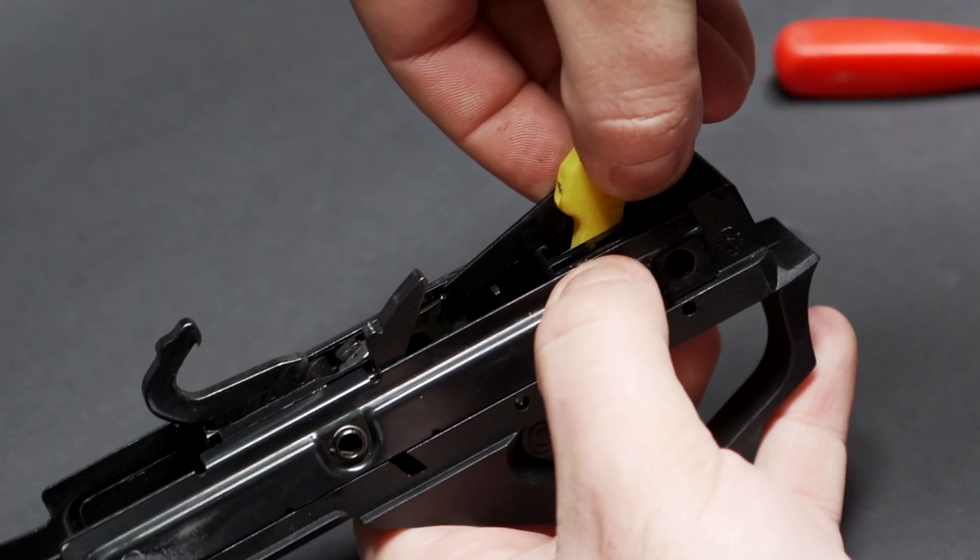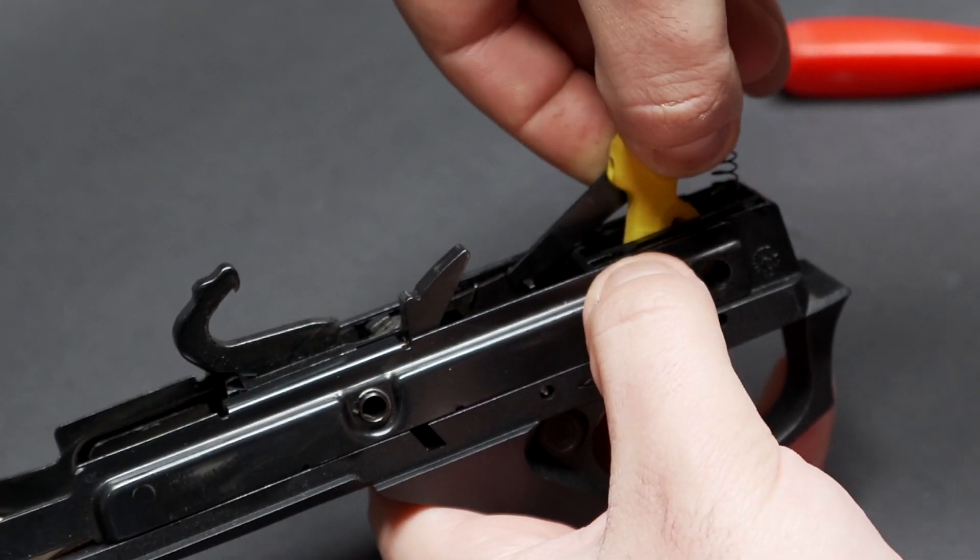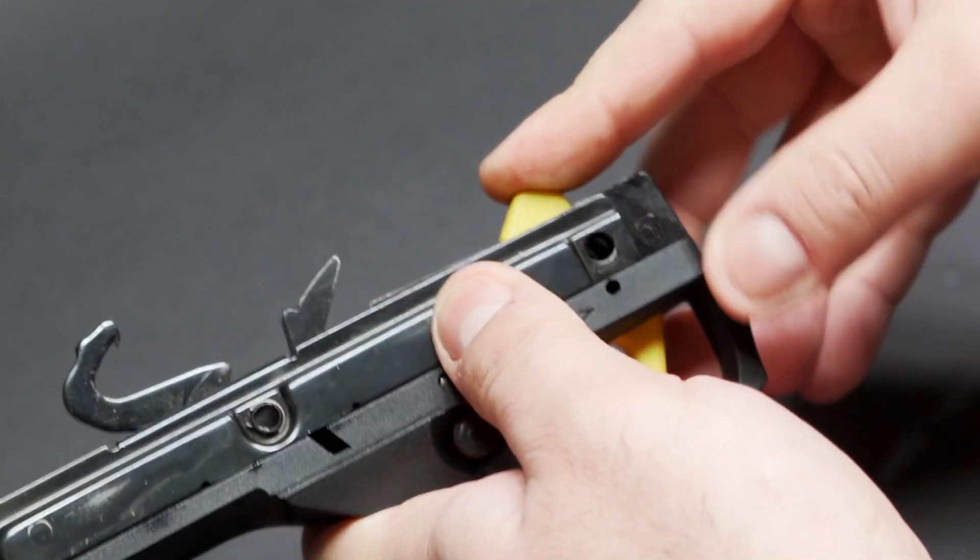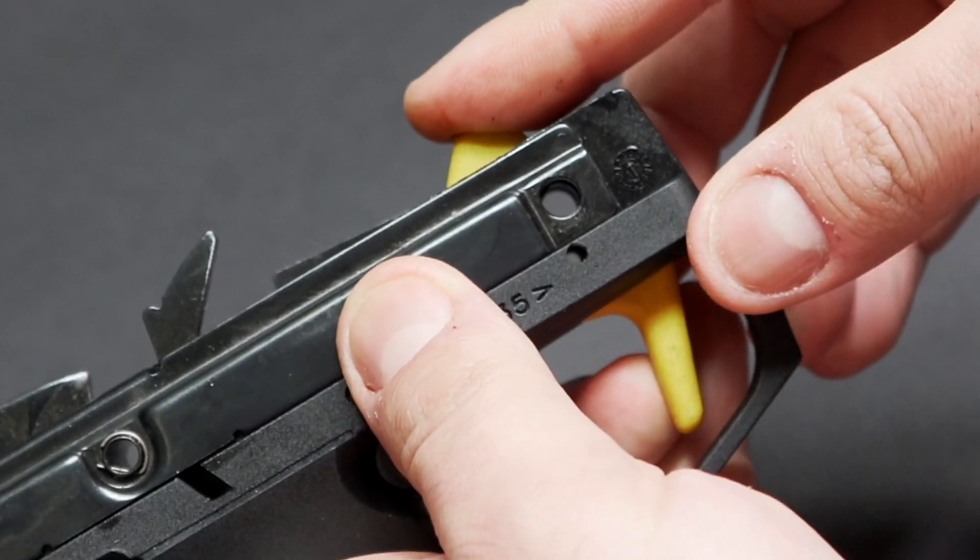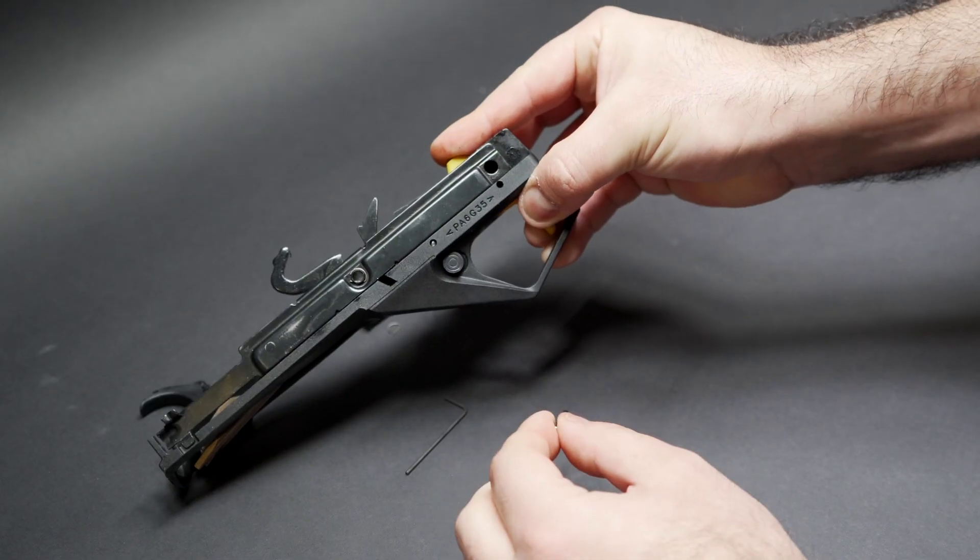Making sure that the top of the transfer bar is over the back edge of the bolt catch like this. If you catch it like that, it will get stuck. So make sure it's over there and then just push it down until you can see daylight through the hole where the trigger axle will go through.